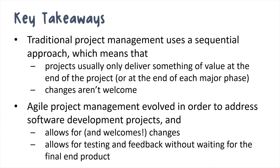Let's wrap up with our key takeaways. Traditional project management uses a sequential approach, which means projects will usually only deliver something of value at the end of the entire project or at the end of each major phase — and frankly, changes are not welcome. Agile project management evolved to address software development, and it allows for and welcomes changes. It also allows for testing and feedback without waiting till the very end of the project — we don't have to wait for the final end product. We inspect and adapt as we go along.